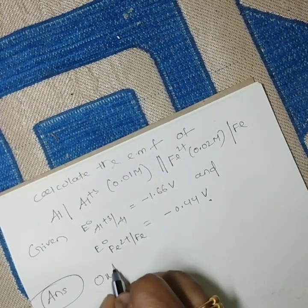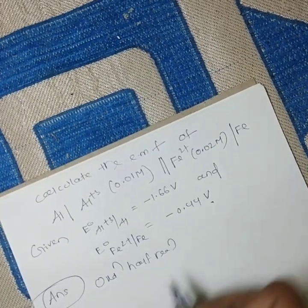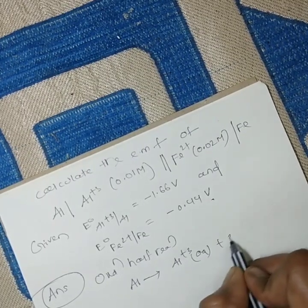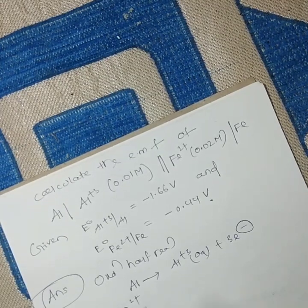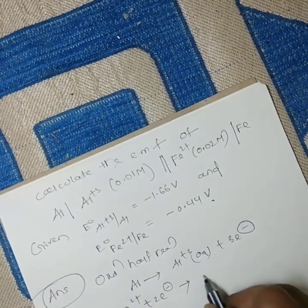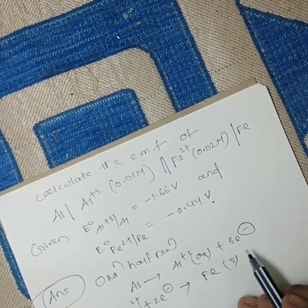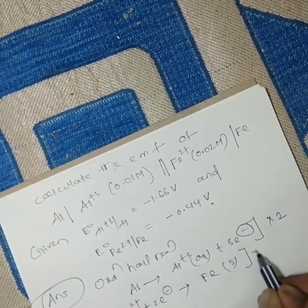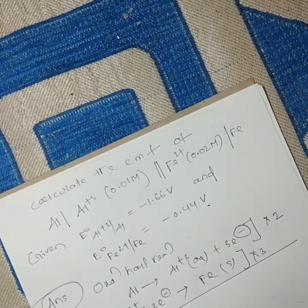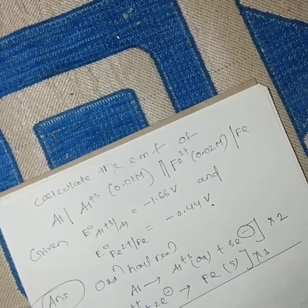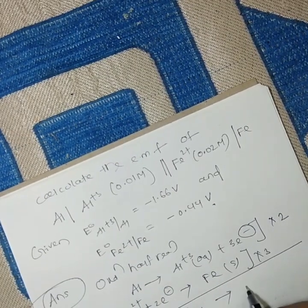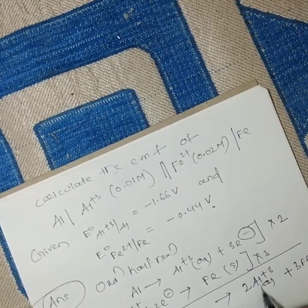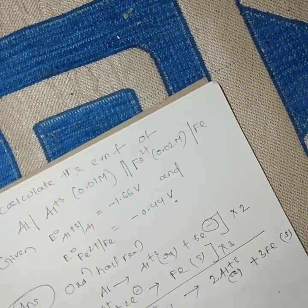The oxidation half reaction is: Al(s) → Al³⁺(aq) + 3e⁻. The reduction half reaction is: Fe²⁺(aq) + 2e⁻ → Fe(s). To balance electrons — 3 and 2 — we multiply the first by 2 and the second by 3. The net cell reaction becomes: 2Al(s) + 3Fe²⁺(aq) → 2Al³⁺(aq) + 3Fe(s).